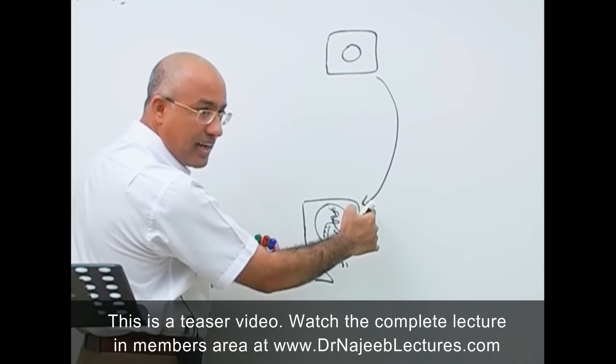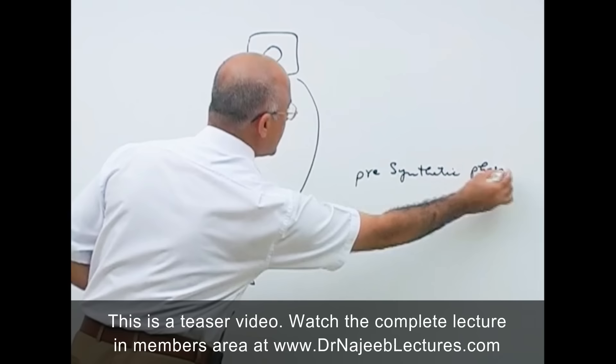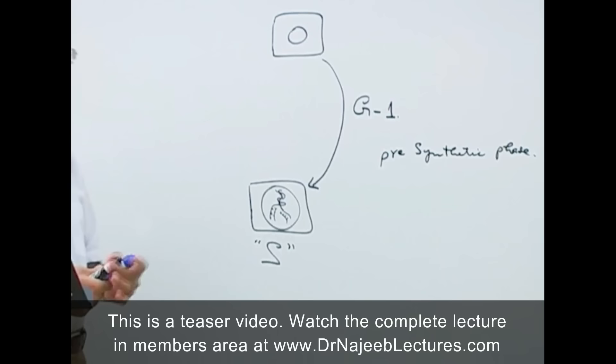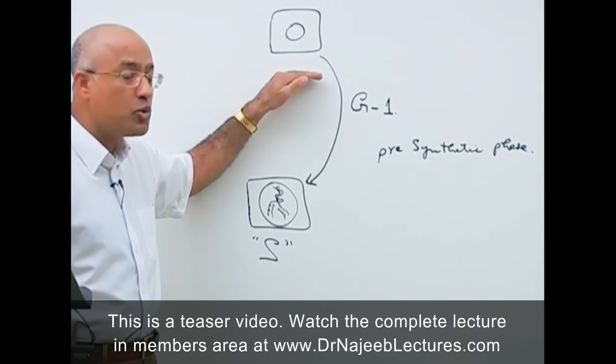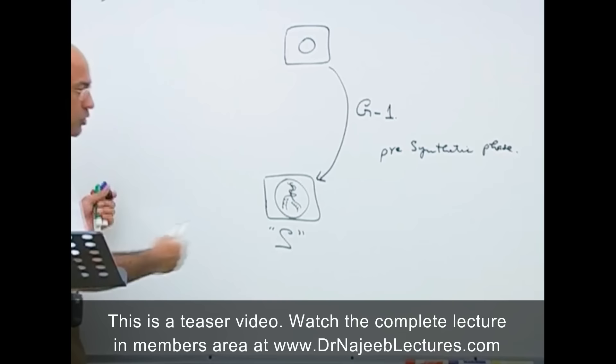The phase of the cell before DNA synthesis is called the pre-synthetic phase. Pre-synthetic means before synthesis of DNA. This phase, the pre-synthetic phase, is also called Gap 1 or Growth Phase 1, or simply G1. When a cell plans to divide, first it will enter into G1 phase where it will do all its preparations at the molecular level and organelle level to get ready to synthesize the DNA.